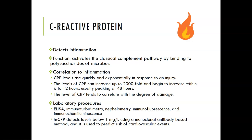C-reactive protein detects inflammation but is very non-specific and cannot tell you what is causing it. Its function is to activate the classic complement pathway by binding to polysaccharides on microbial cell walls. CRP rises quickly and exponentially in response to injury or acute inflammation — levels can increase up to 2,000-fold and begin rising within 6 to 12 hours of injury, usually peaking at 48 hours. The level of CRP correlates with the degree of damage and inflammation. Lab methods include ELISA, immunoturbidimetry, nephelometry, immunofluorescence, and immunochemiluminescence.